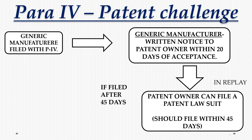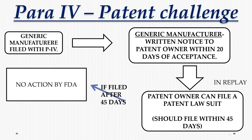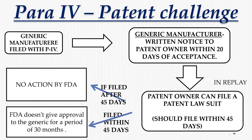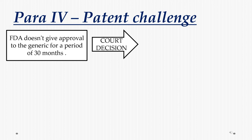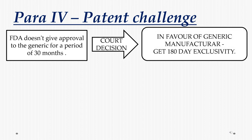In reply, the patent owner or branded drug manufacturer can file a patent lawsuit against the generic drug manufacturer. If the lawsuit is filed after 45 days, no action is taken by the FDA. If it is filed within 45 days, the FDA does not give approval to the generic manufacturer for a period of 30 months. Then the court will decide. If the court decision was in favor of the branded drug, the generic drug manufacturer must withdraw the application or can file a Para-3 certification. If the decision is in favor of the generic manufacturer, they get 180 days exclusivity.